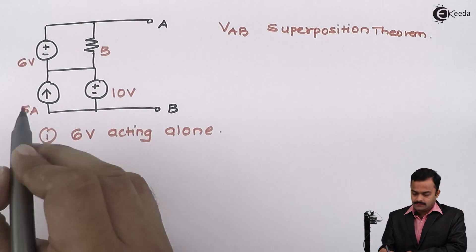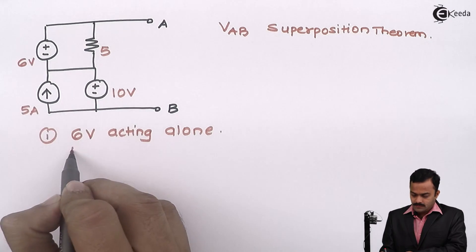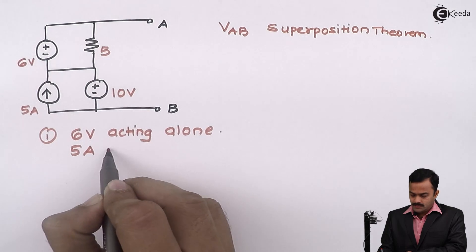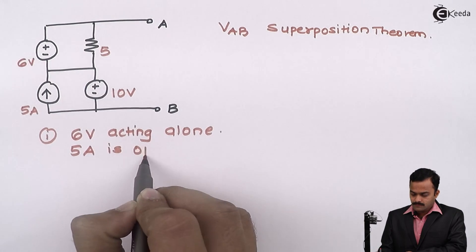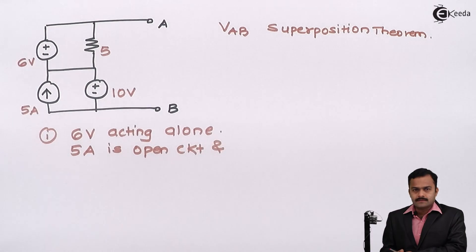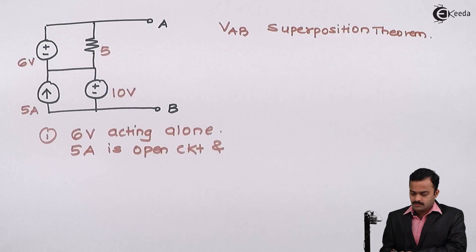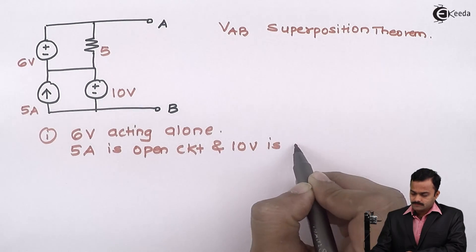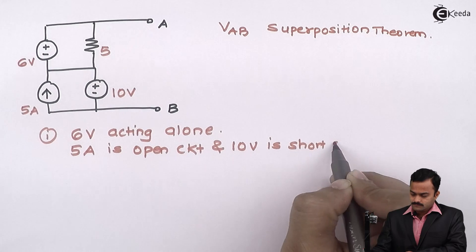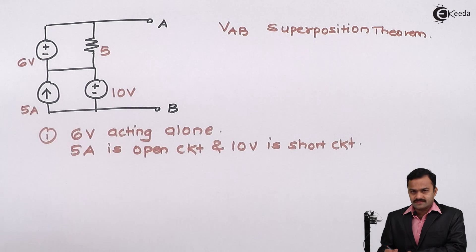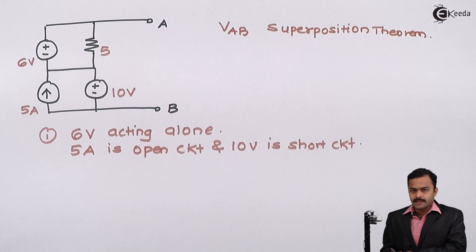Remaining sources, that is 5A current source, we need to open circuit. So 5A is open circuited, and 10V, another voltage source, I will short circuit. Since modification is made to the original circuit, we need to redraw it.